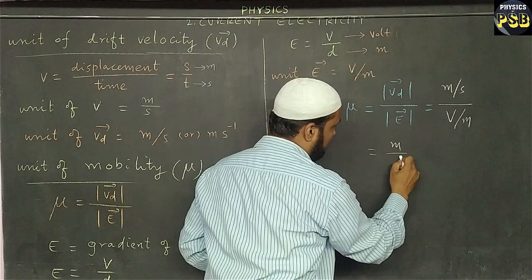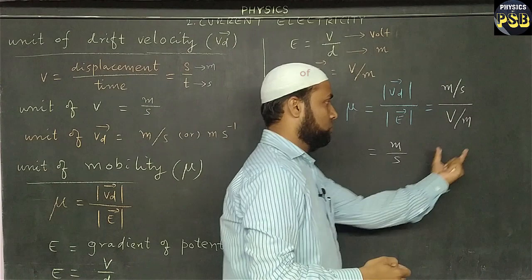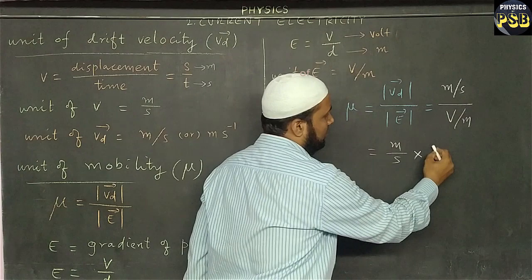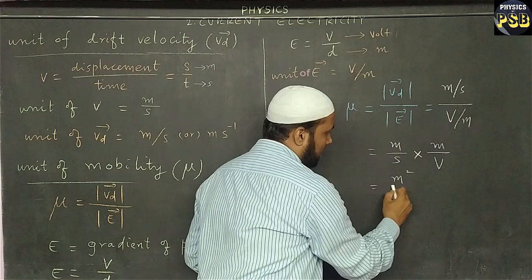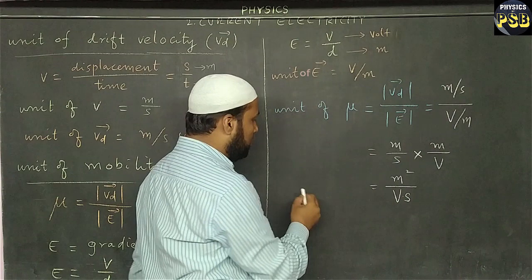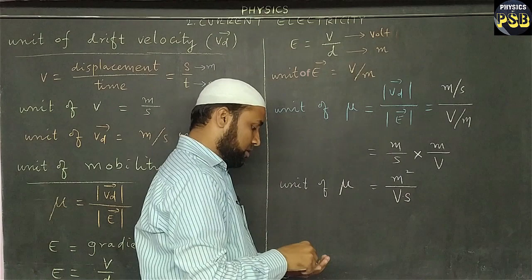Keeping meter per second in the numerator, the denominator term volt per meter is taken to the numerator as its reciprocal. When we multiply, we get meter squared upon volt second. So the unit of mobility is m²V⁻¹s⁻¹.